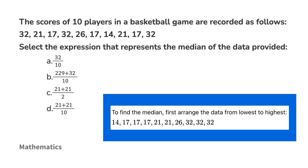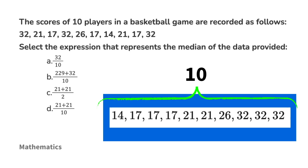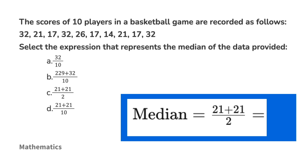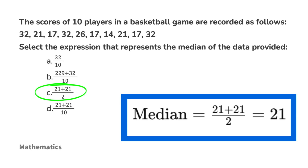List the scores in ascending order — that's the first step. We have 10 data points, which is an even number, so the median will be the average of the two scores in the middle. In this case, both middle values are 21 and 21. To calculate the median: 21 plus 21 divided by 2 equals 21 — also written as option C: (21 plus 21) all over 2.